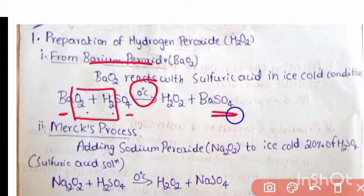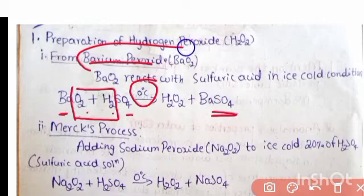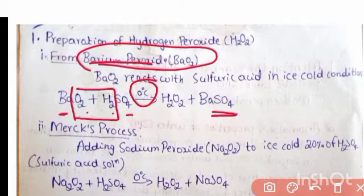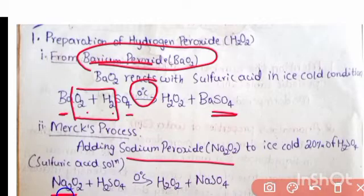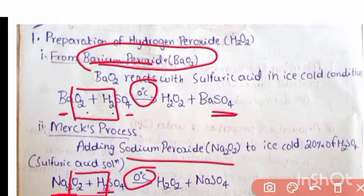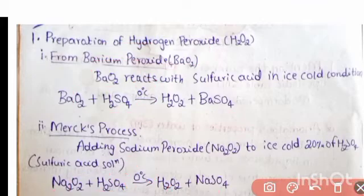Second method: Marx process. In this process, instead of barium peroxide, we take sodium peroxide (Na2O2), which is reacted with sulfuric acid at ice cold conditions. This forms H2O2 (hydrogen peroxide) and sodium sulfate (Na2SO4).